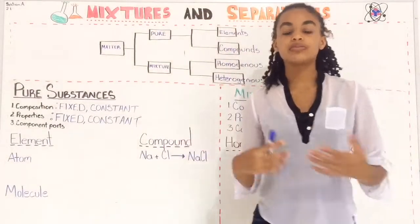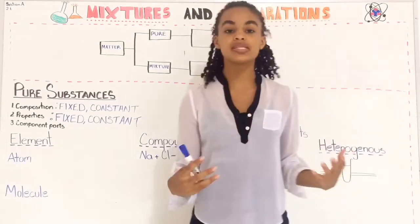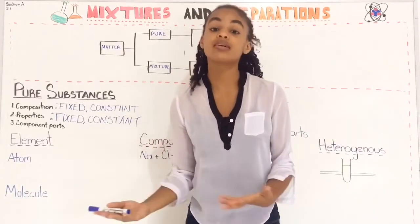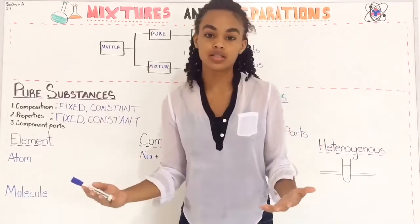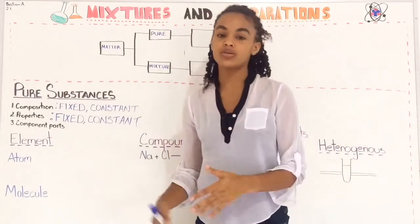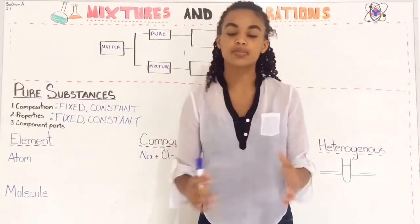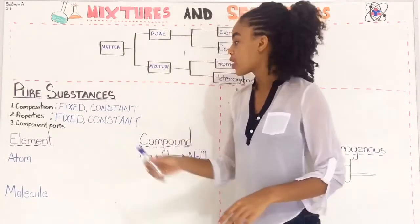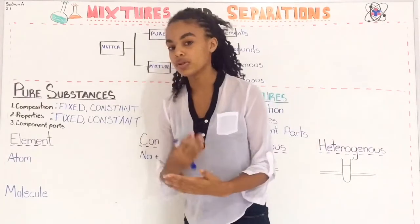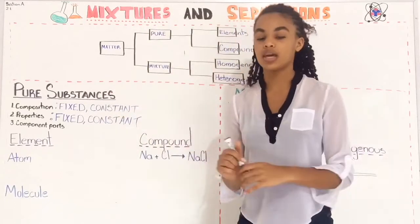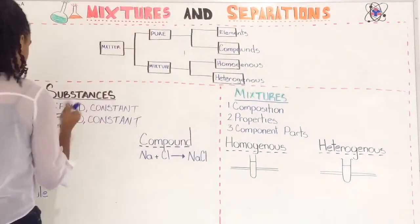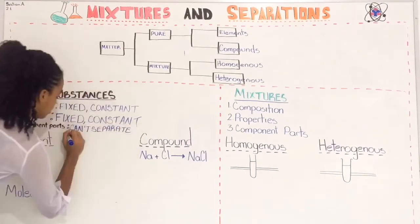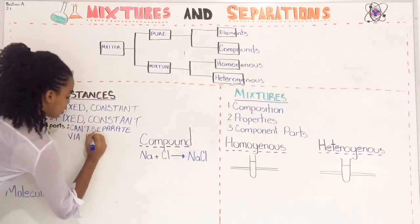The component parts — which simply means what makes up this pure substance — for example, water. You can't separate these component parts by using physical means. You can't filter water from water; you can't separate hydrogen or oxygen by using any of the physical separation methods. In the next videos you'll see the different kinds of separation methods. The component parts of a pure substance cannot be separated by physical methods.